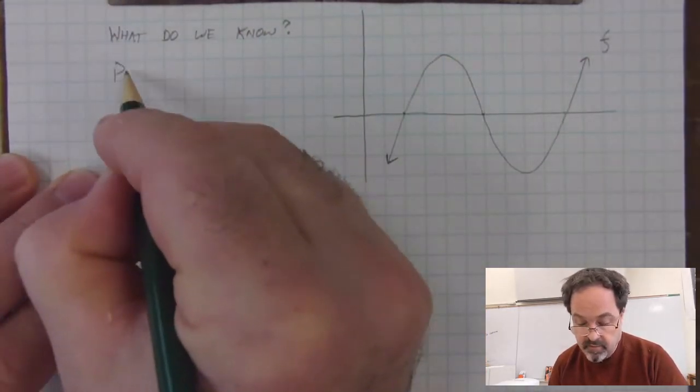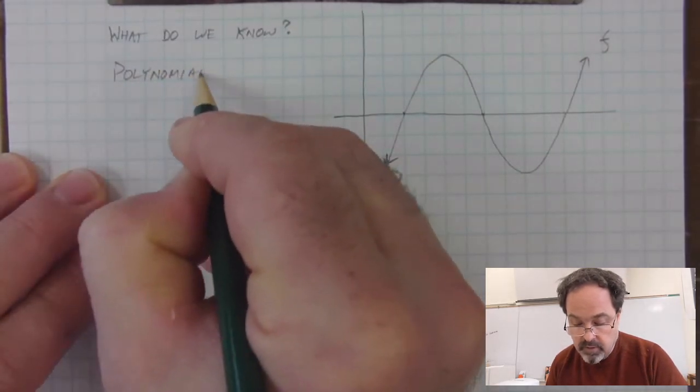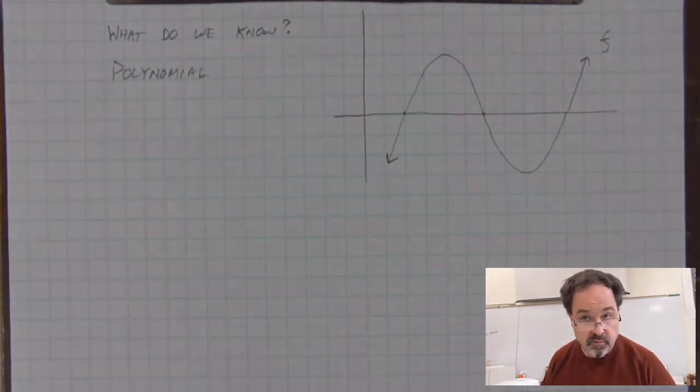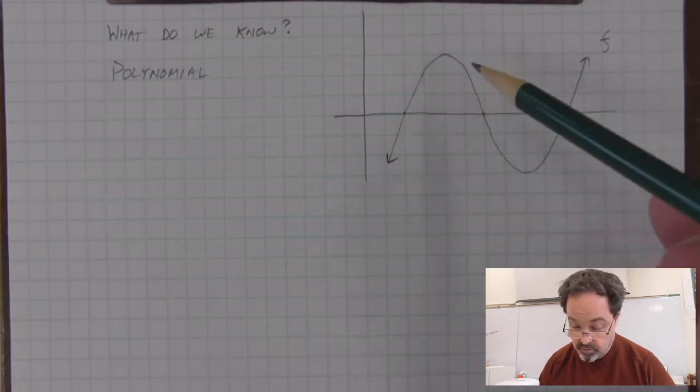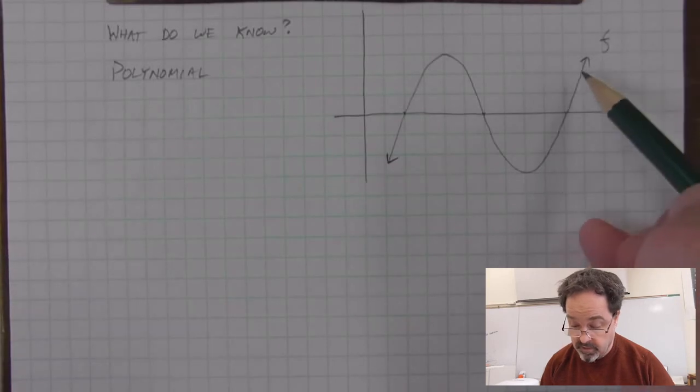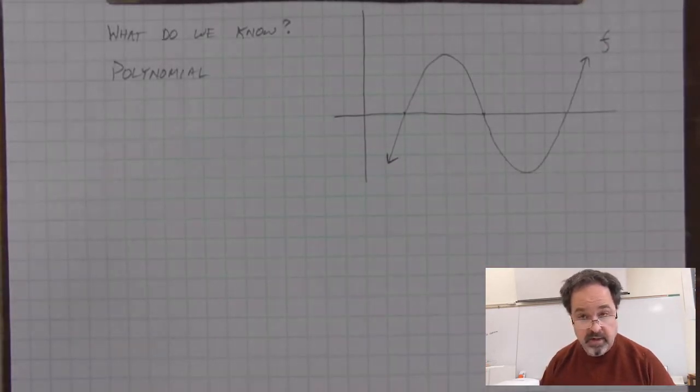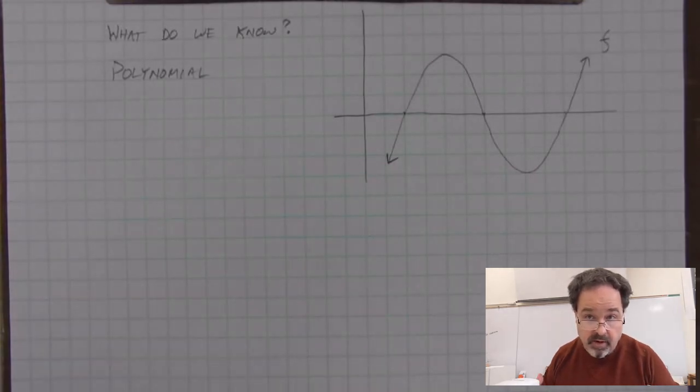One is we could say that this is a polynomial. It's not a sinusoidal function. It does look like a sine curve, but because the arrows are suggesting that it keeps going in that direction and it keeps going down over here, it doesn't cycle. So the expression for this has to come from a polynomial form.